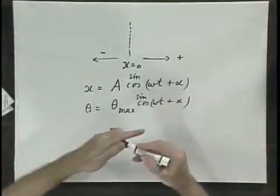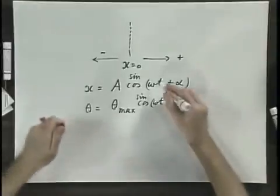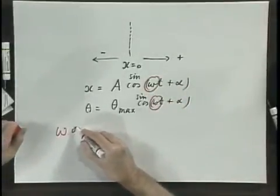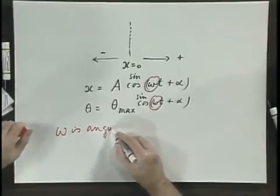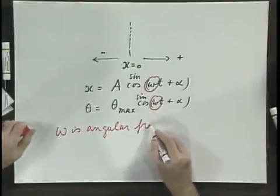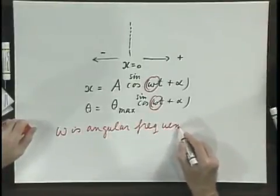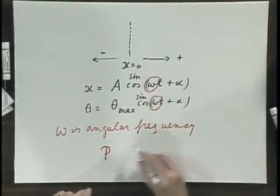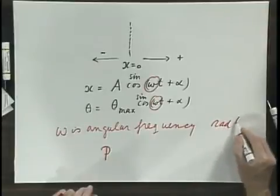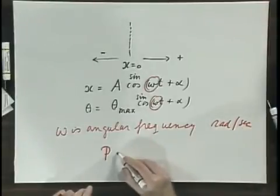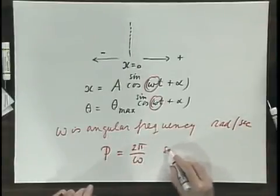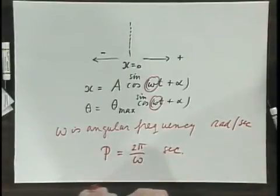This omega that you see in this equation is the angular frequency. Angular frequency is in radians per second. And the period of one oscillation equals two pi divided by omega, and that would then be in seconds.